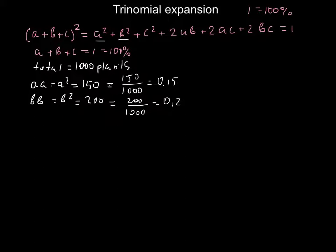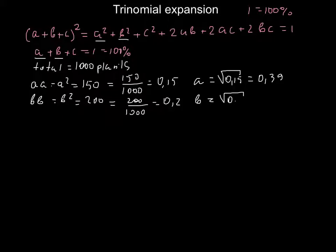Now we can find the allele frequencies A and B that we need for the formula. Since we know A² and B², we just take the square root. So A equals the square root of 0.15, which is approximately 0.39. And B equals the square root of 0.20, which is approximately 0.45. All answers are rounded to two decimal places.